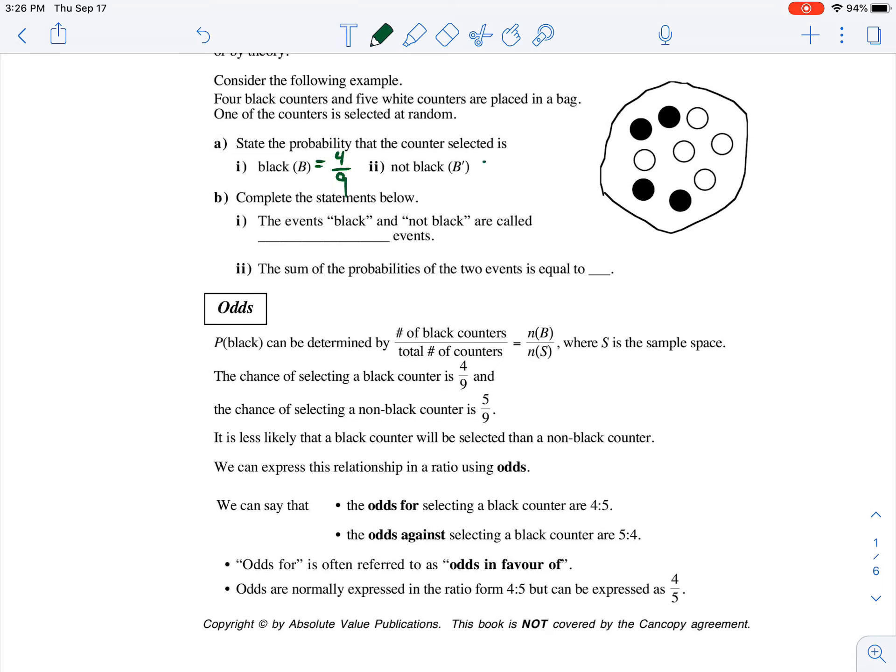Now, the probability that it's not black, so the complement of it being black, would equal - well, how many non-blacks are there? And in this example, non-black would just mean white. So there are five white counters all over the total nine.